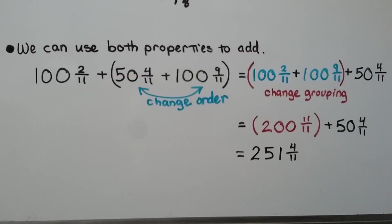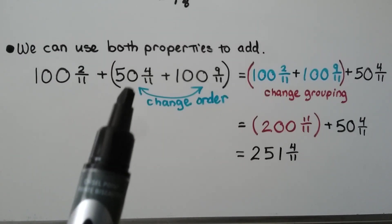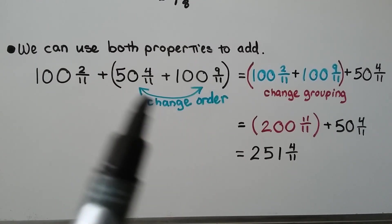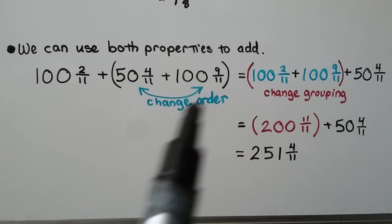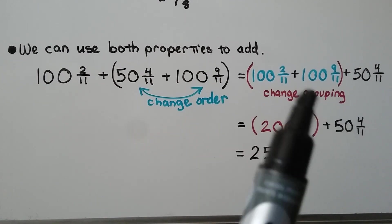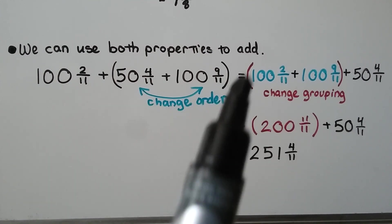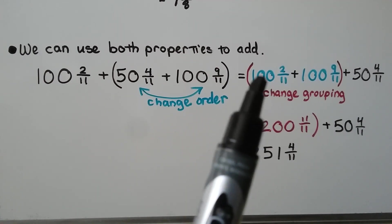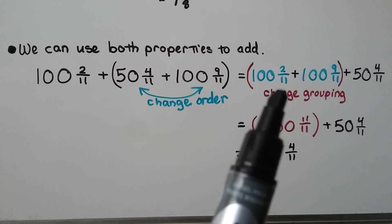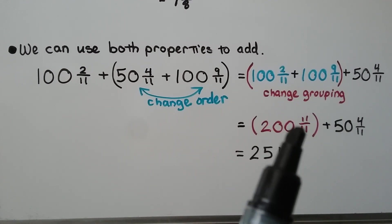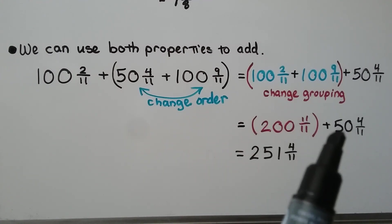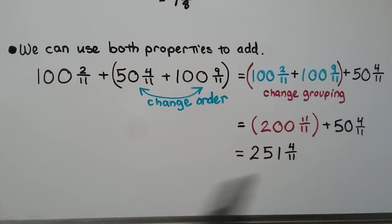We can use both properties together to add an equation. We have 100 and 2 elevenths plus 50 and 4 elevenths plus 100 and 9 elevenths in parentheses. We change the order of two addends using the commutative property, and change the grouping so the parentheses are around the first two addends. We have 100 plus 100 equals 200, and 2 elevenths plus 9 elevenths equals 11 elevenths. Then we add 50 and 4 elevenths: 201 plus 50 is 251, and 4 elevenths remains. We can use mental math to do this.